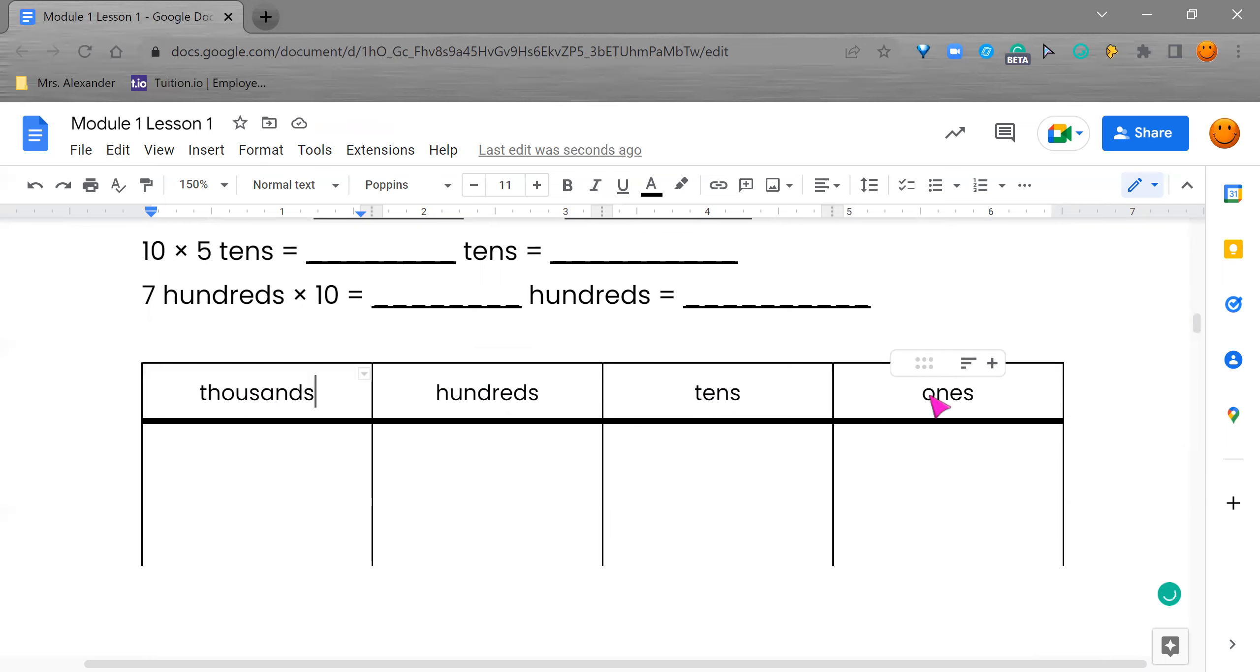So ones is our first digit, so it's the furthest right. Next to that to the left is tens. Next to that is the hundreds. Again, we keep going left. And one more left is the thousands.